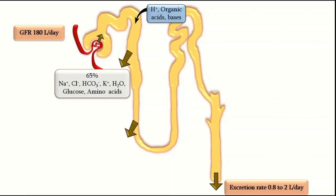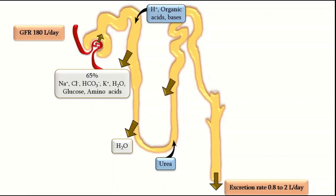From the loop of Henle: the thin descending segment reabsorbs water. Both the proximal convoluted tubule and the descending limb of the loop of Henle are highly permeable to water, so they avidly reabsorb water back into the blood. The thin ascending limb of the loop of Henle secretes urea into the tubular lumen and is not permeable to water, so no water reabsorption occurs there. The thick ascending limb reabsorbs sodium, chloride, potassium, magnesium and calcium — about 25 percent of the filtered sodium load — and is totally impermeable to water.